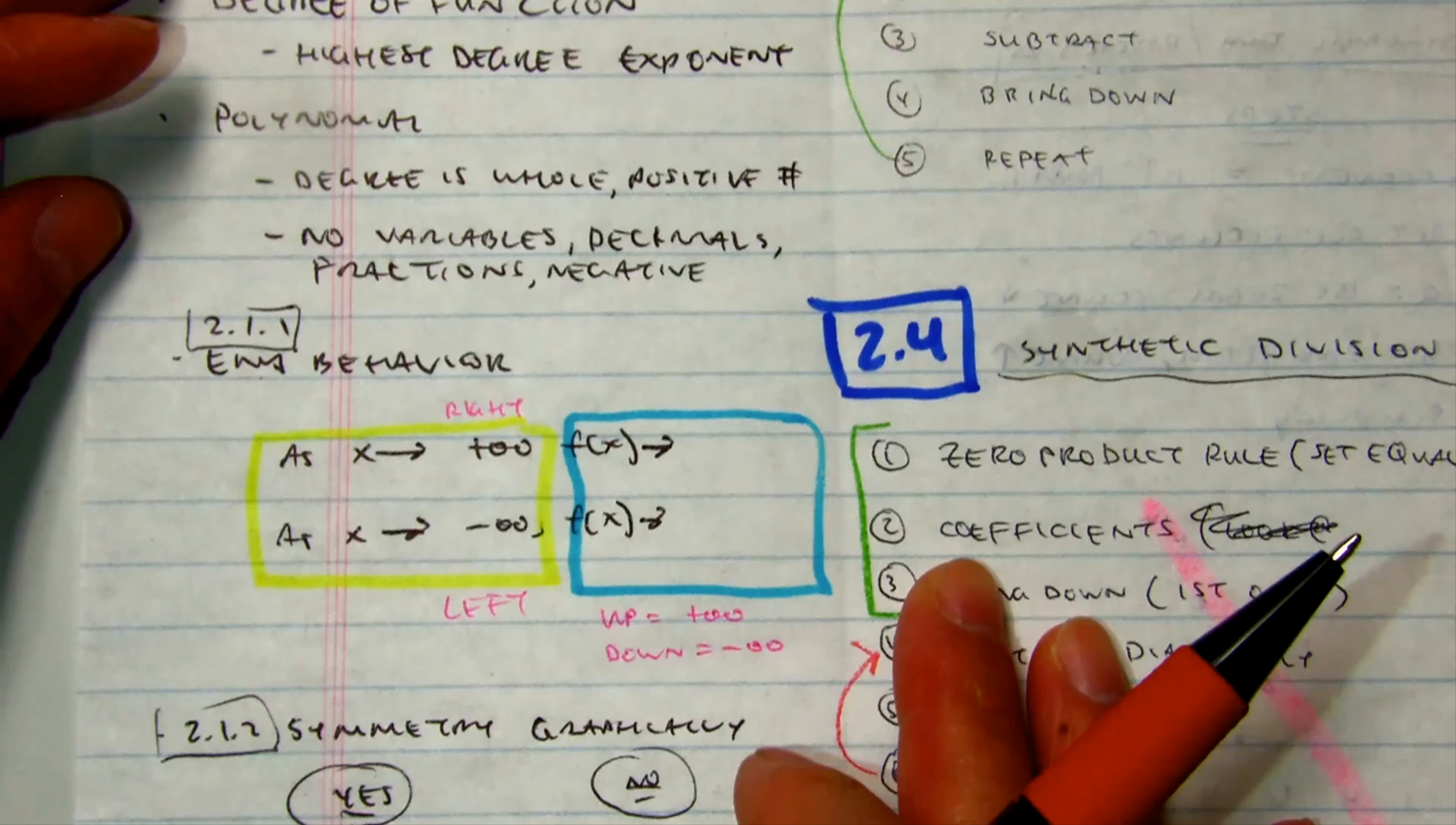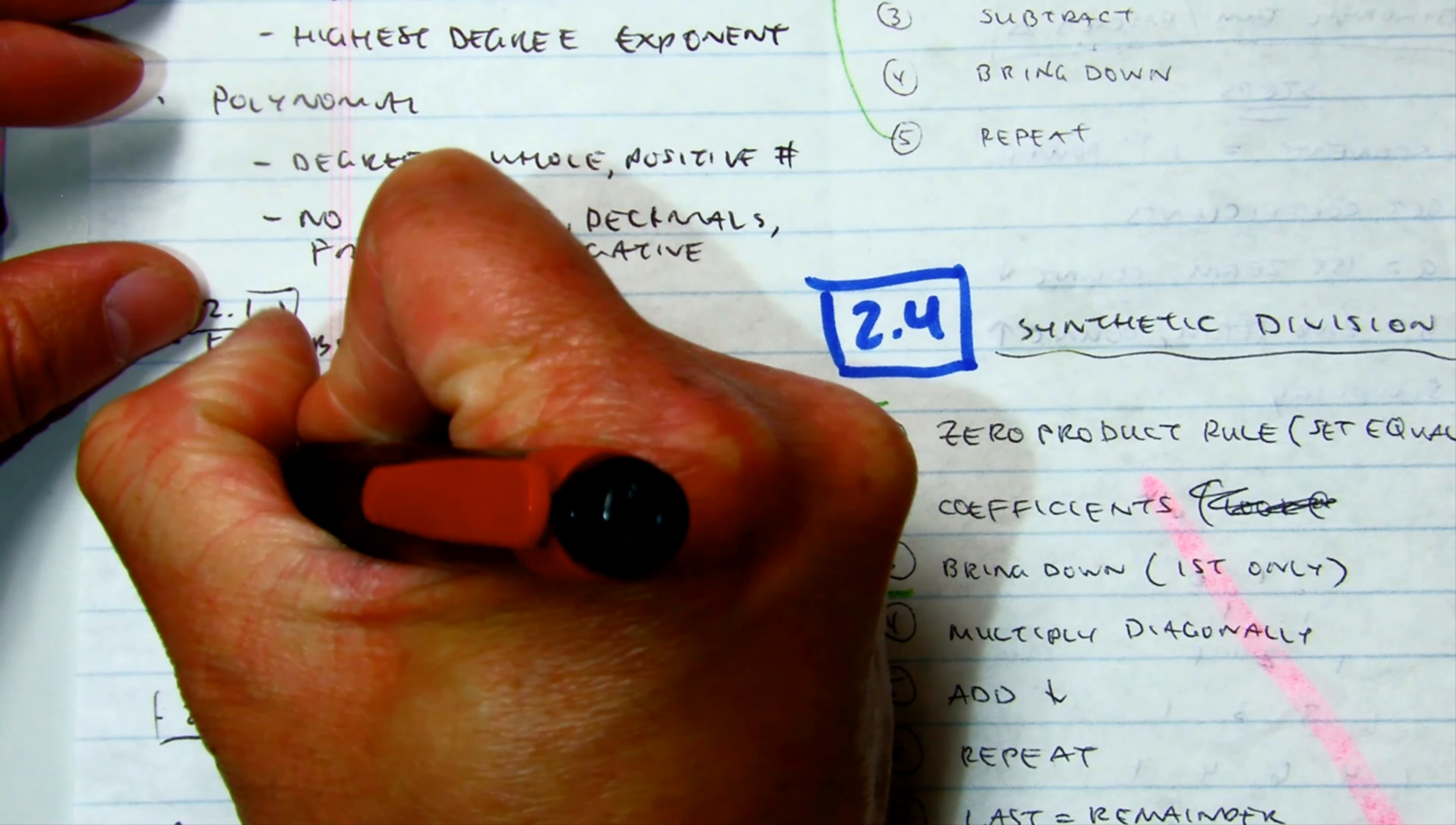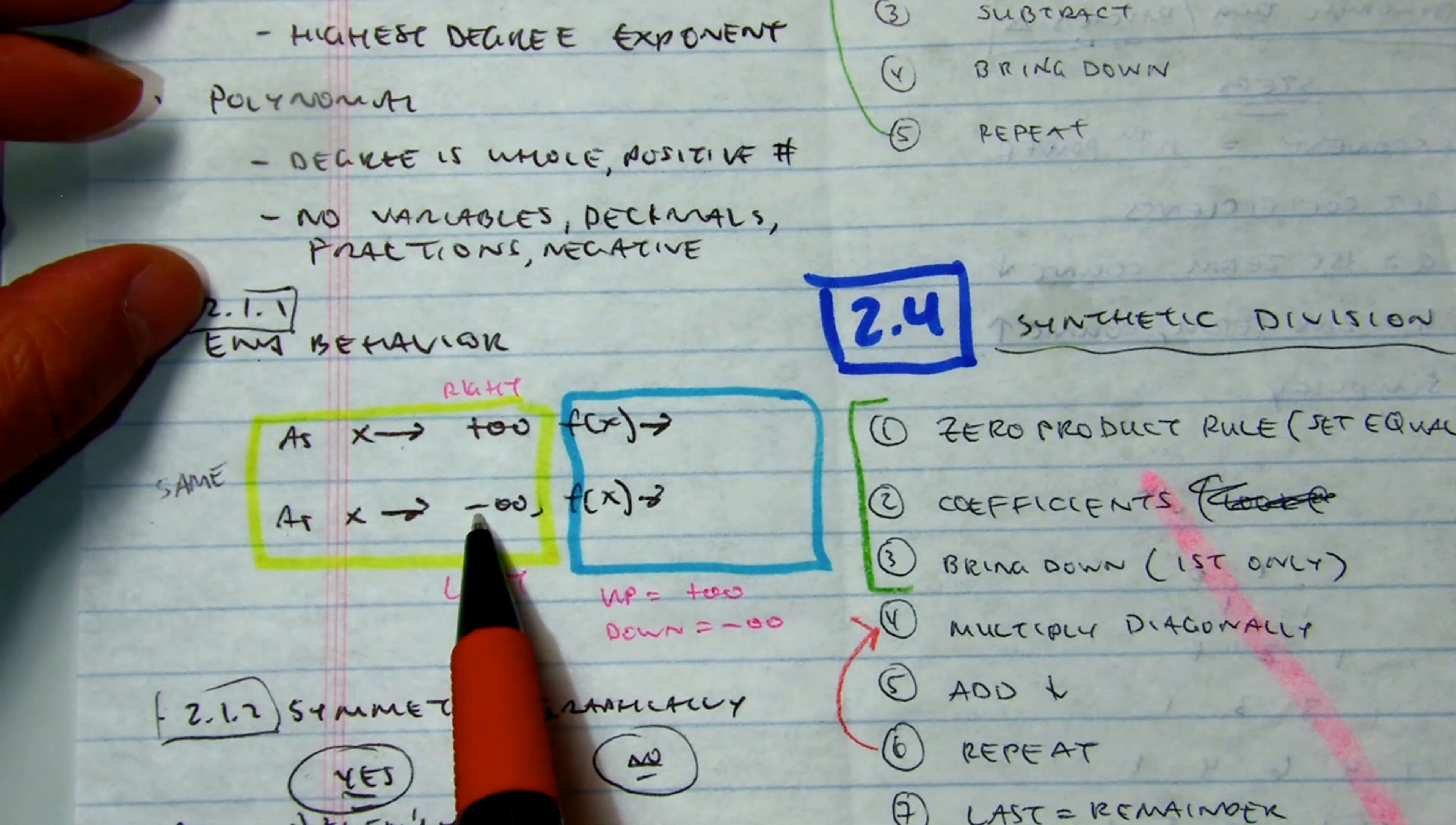Okay, in 2.1.1 we learn about the end behavior. It's not how you start, it's how you end. So this yellow box will always be the same. As x approaches positive infinity. This one says as x approaches negative infinity.